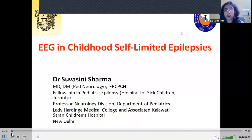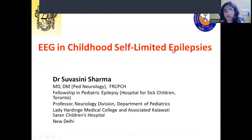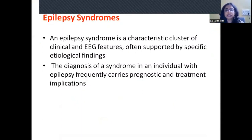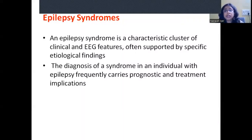This is the first part of the talk dealing with epilepsy syndromes. The learning objectives are: first, to discuss the concept of epilepsy syndromes; second, to understand the concept of self-limited epilepsy syndromes; and third, to discuss the electroclinical features of common childhood self-limited epilepsy syndromes. An epilepsy syndrome is a characteristic cluster of clinical and EEG features — these are electroclinical syndromes. The diagnosis of a syndrome frequently carries prognostic and treatment implications, especially important in children.